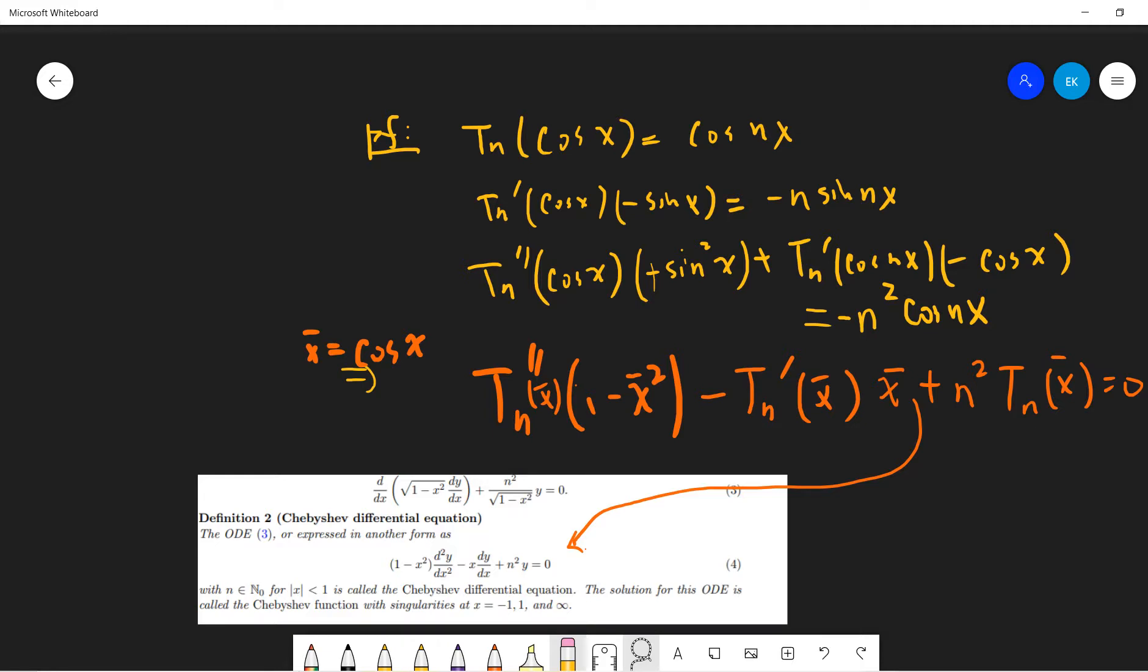Okay, so actually, this is the people usually call it the differential equation for the Chebyshev. And then you can also, once you derive this, you can basically change this to this. So there's nothing special. You just change it into the Sturm-Liouville problem.